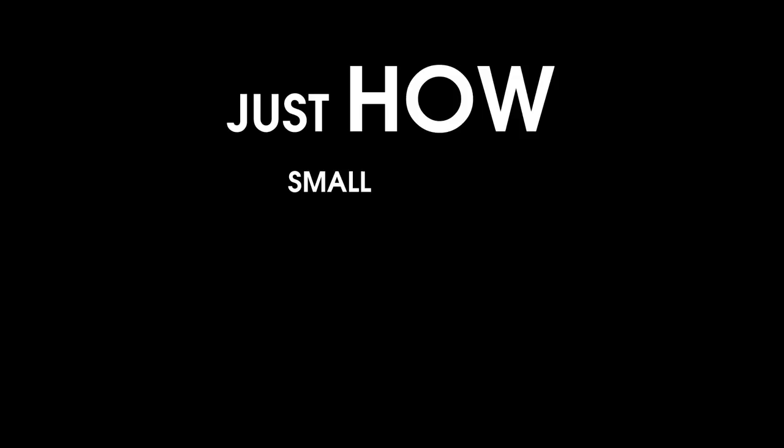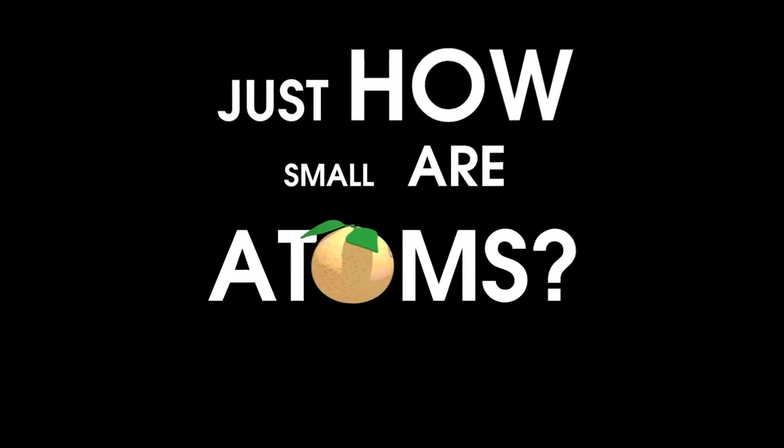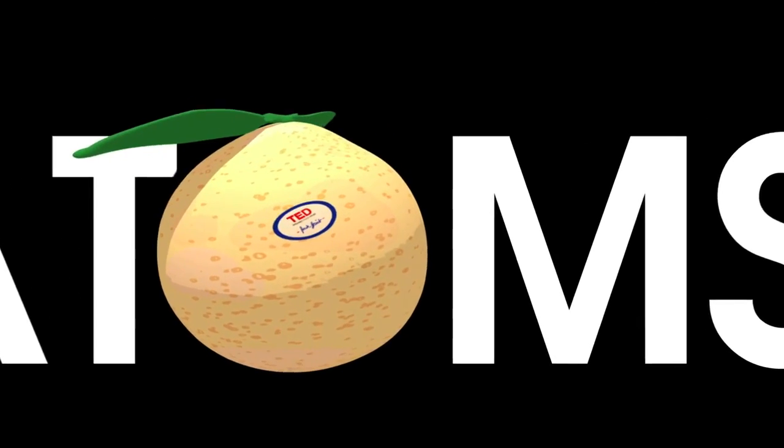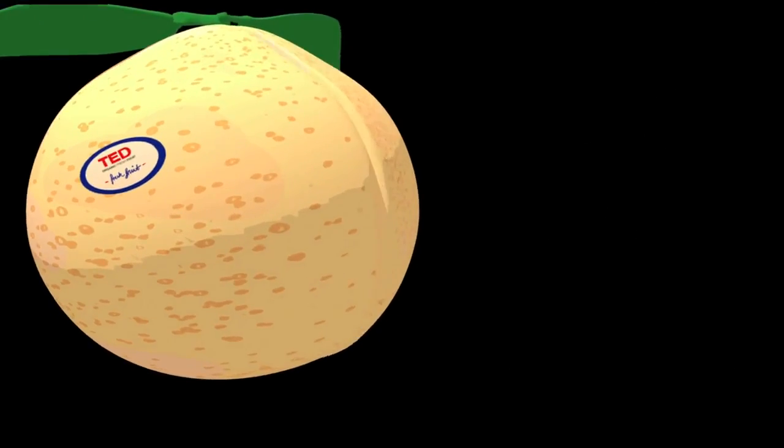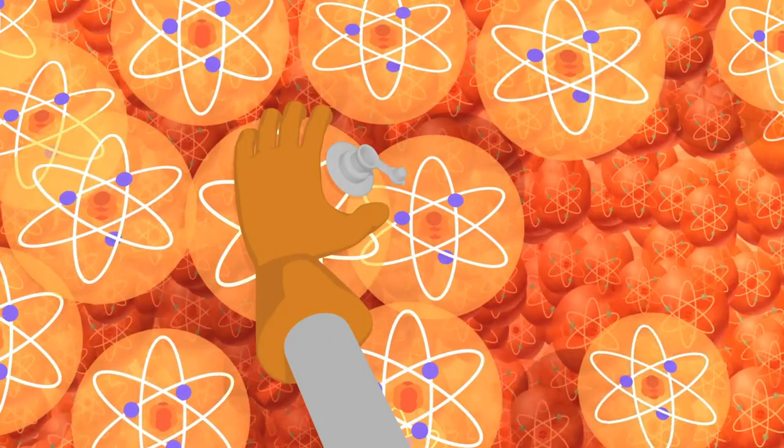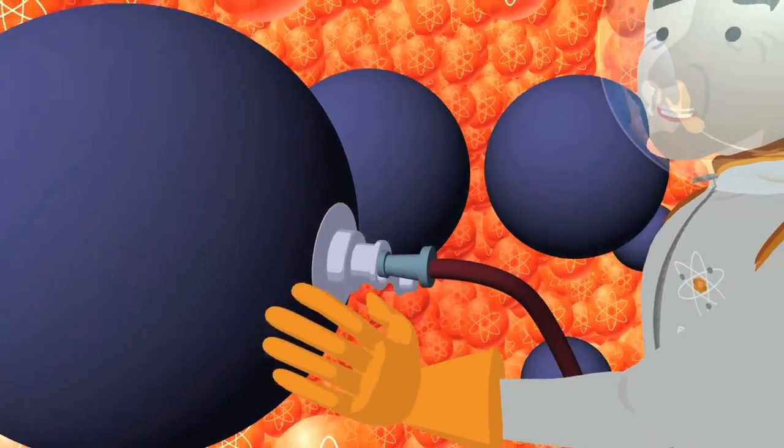So you ask, just how small are atoms? Well, to understand this, let's ask this question: How many atoms are in a grapefruit? Well, let's assume that the grapefruit is made up of only nitrogen atoms, which isn't at all true, but there are nitrogen atoms in a grapefruit. Well, to help you visualize this, let's blow up each of the atoms to the size of a blueberry. And then how big would the grapefruit have to be?